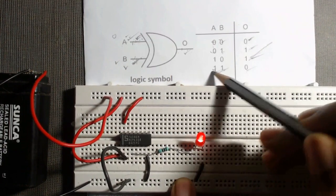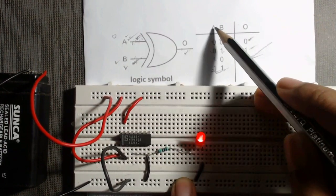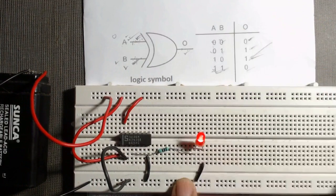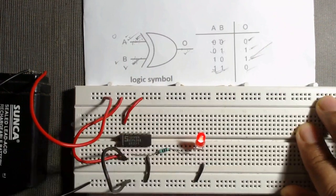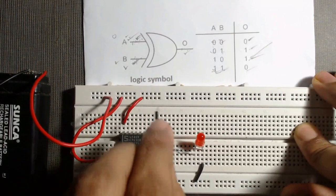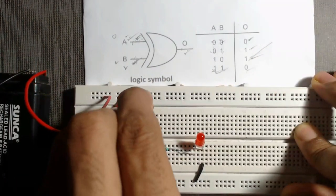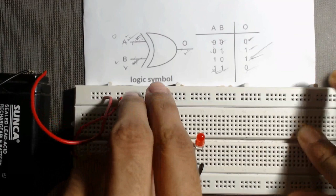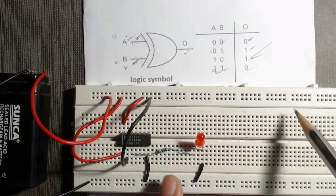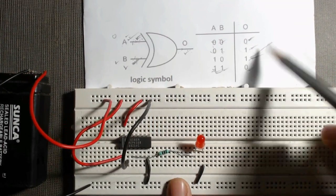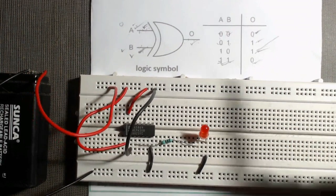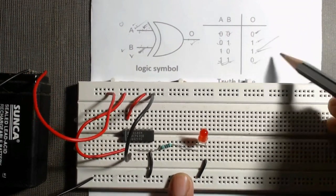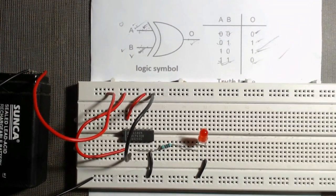Then for the last case, A is 1 and B is 1 — that means A is connected to VCC and B is also connected to VCC. In this case the output should be 0. And here also we get 0, meaning the LED is now off. So the truth table is verified.